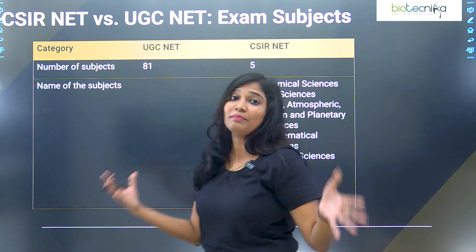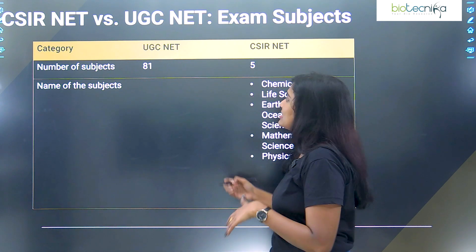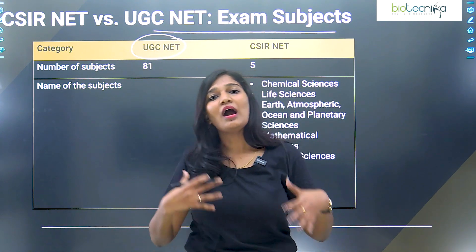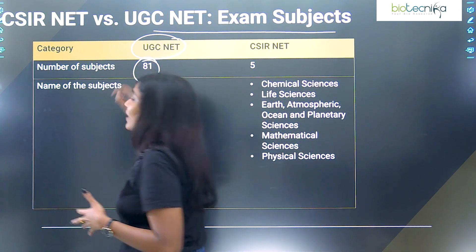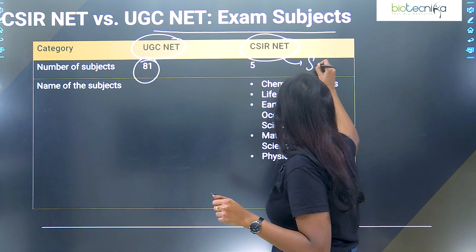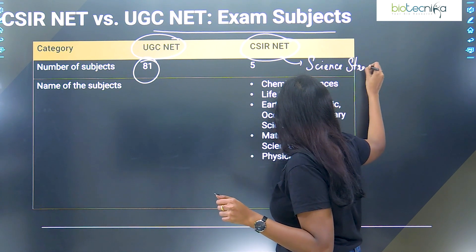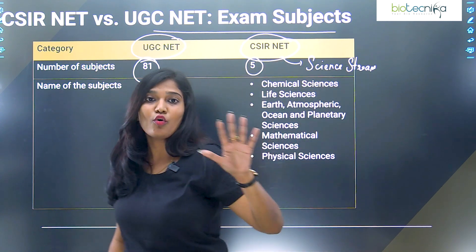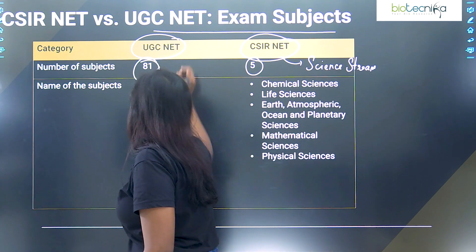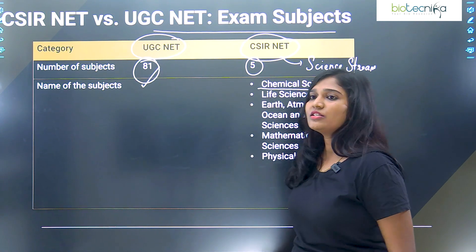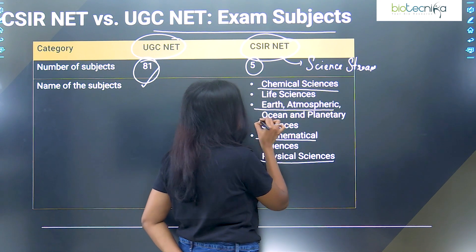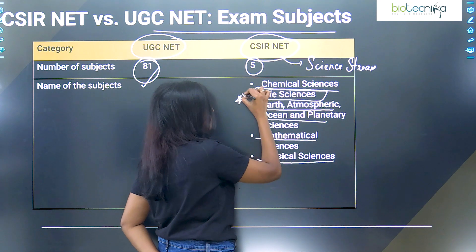Who can apply? In terms of exam subjects, UGC NET mainly deals with arts, humanities, or commerce — there are 81 subjects where UGC examination is conducted. But CSIR NET mainly deals with the science stream and has only five subjects: Chemical Sciences, Life Sciences, Physical Sciences, Mathematics, and Earth Sciences. Only science students can apply for CSIR NET, while arts, humanities, or any other subjects apply for UGC NET.